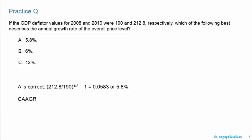I like this question because it puts a little bit of a twist, and you have to use something that we learned in the quant section, which is the compound annual average growth rate (CAAGR). So A is correct. You're taking 212.8 divided by 190 to the power of 0.5 minus 1 equals 0.0583, or 5.8%. You took the 2010 value divided by the 2008 value to the power of 0.5 for the compound annual average growth rate.